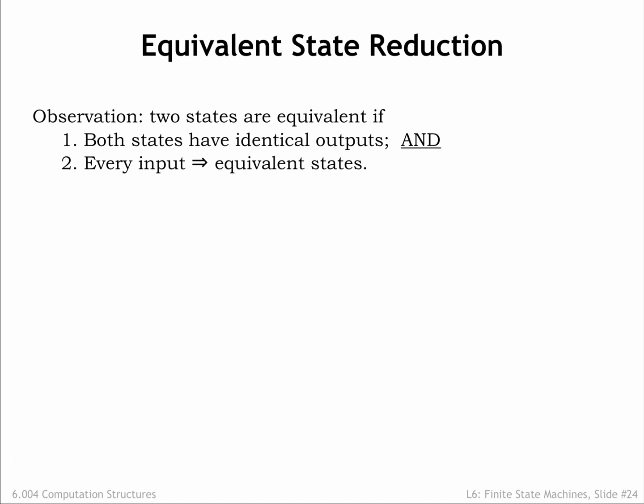Two states are equivalent if they meet the following two criteria. First, the states must have identical outputs. This makes sense, since the outputs are visible to the outside, so if their values differed between the two states, that difference would clearly be externally distinguishable.